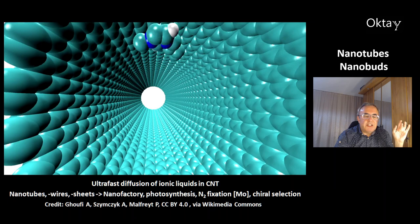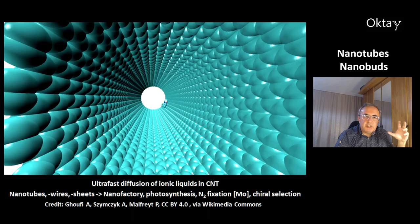This is a nice animation of the ultra-fast diffusion of ionic crystals in carbon nanotubes. Imagine what could be a future product of these technologies: nanotubes, nanowires, nanosheets.